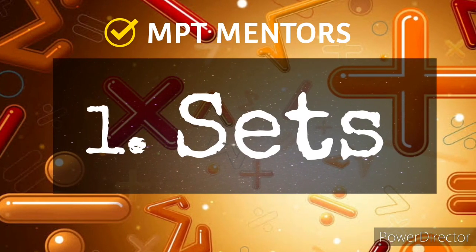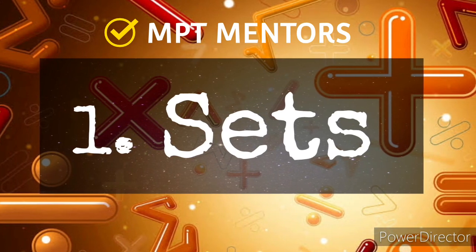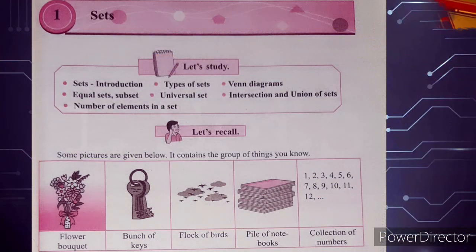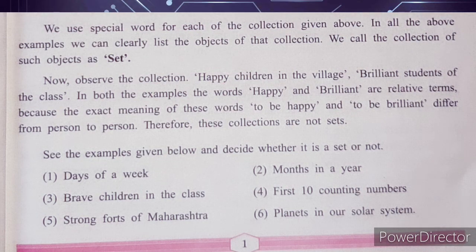Let's start with the very first chapter of the textbook - Sets. In the very first page, you can see some groups of things in pictures: flower bouquet, bunch of keys, pile of notebooks, etc. We call the collection of such objects a set.